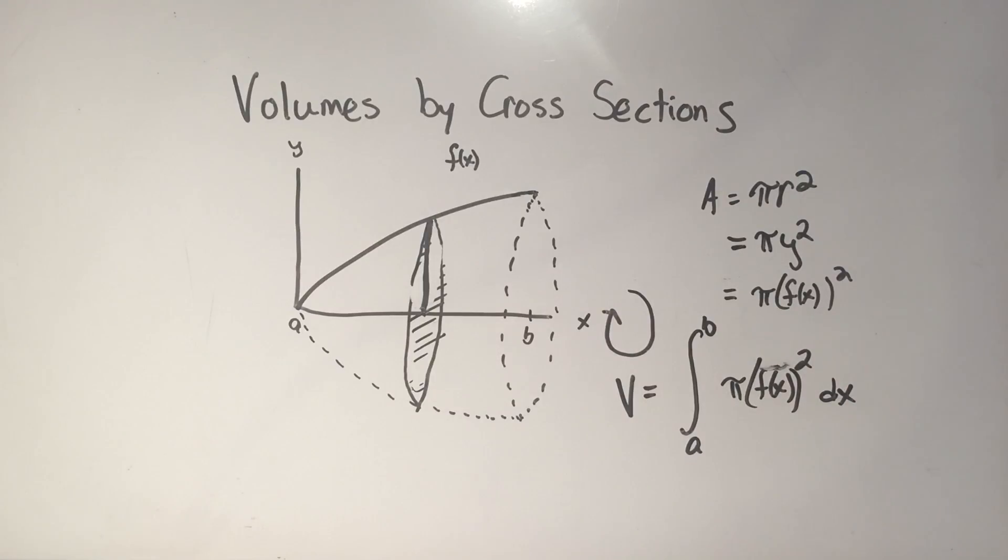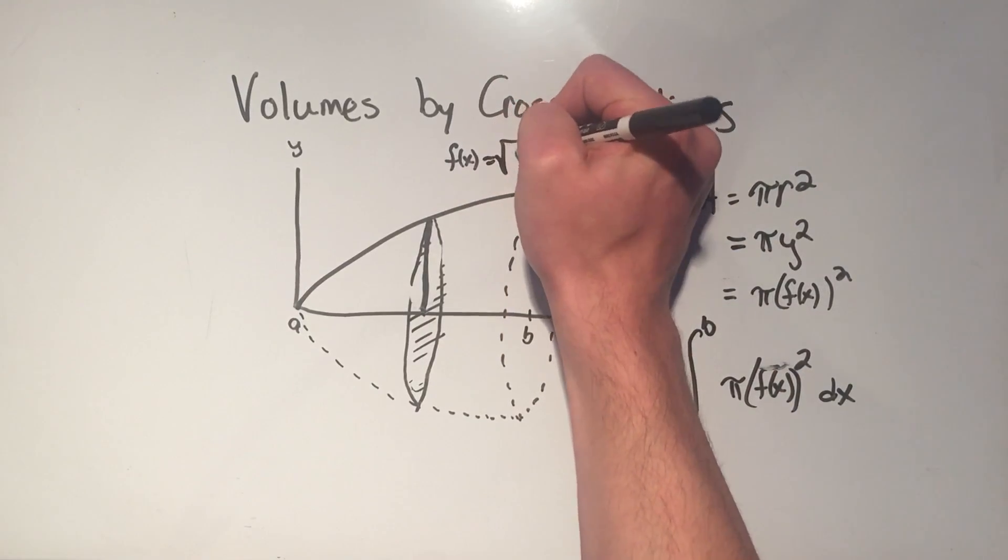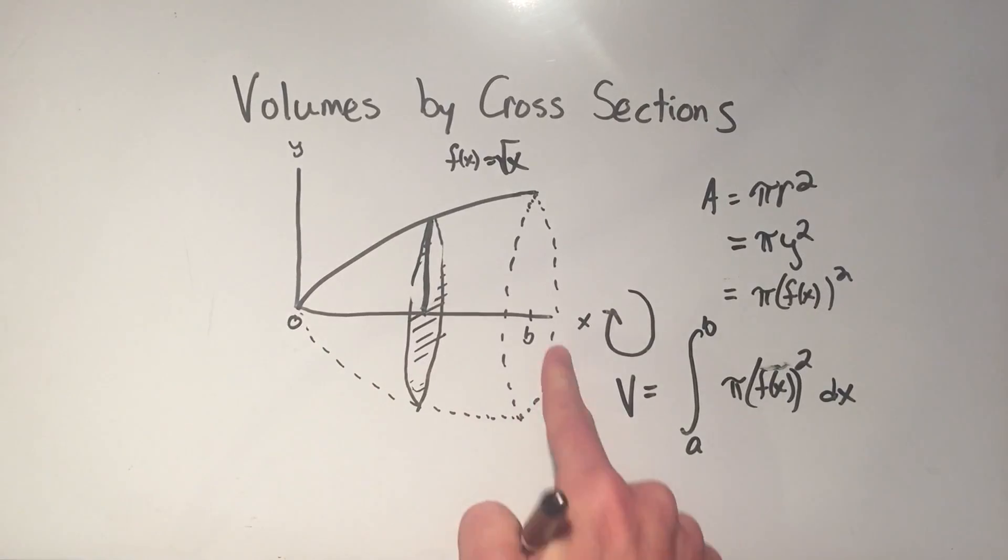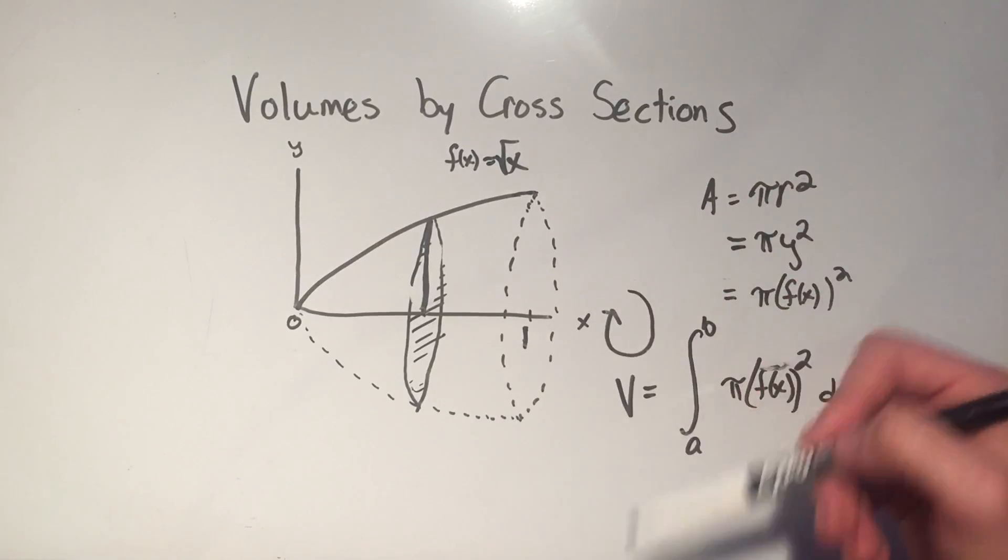That's not a very rigorous proof of this, but this is where the idea comes from. So let's just do a quick example. And let's just say that this function that I came up with was the square root of x, and let's just say a was 0, it looks like 0, and b was 1.